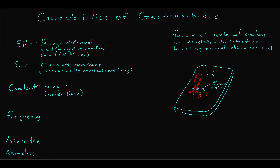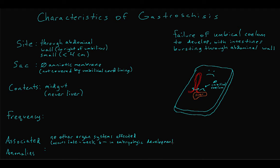Recall that the left umbilical vein persists in the body as the ligamentum teres hepatis in the falciform ligament. The development of the midgut in the umbilical coelom occurs later in embryologic development, around week six, so other organ systems besides the gut are not usually affected. It may, however, present with intestinal atresia. Classically, gastroschisis is associated with premature birth and young maternal age.